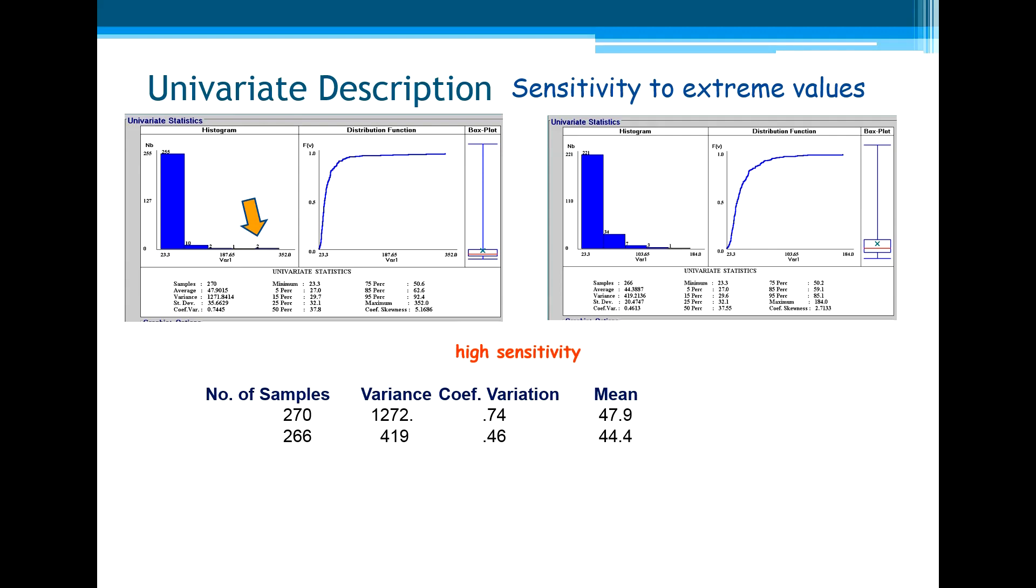For example, the variance and the mean of those two sets of data. One of them has 270 samples and the other one with less, the four samples that we took out. The variance, as you can see, decreased a lot.